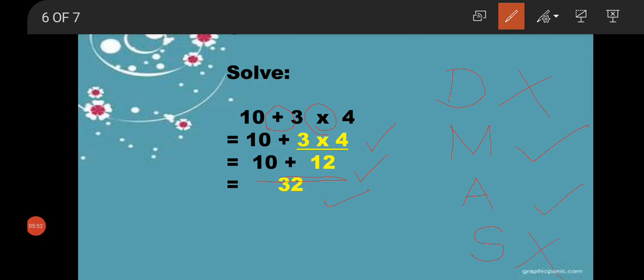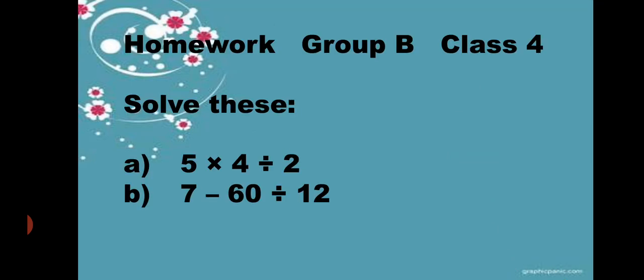So students, this is your classwork. And for today, homework is solve these: A is 5 multiplied by 4 divided by 2, and B is 7 minus 60 divided by 12.